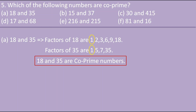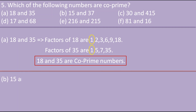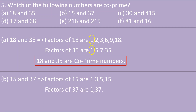For 15 and 37: factors of 15 are 1, 3, 5 and 15, and factors of 37 are 1 and 37 because 37 is a prime number. Only 1 is common, so 15 and 37 are also co-prime numbers.